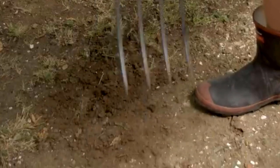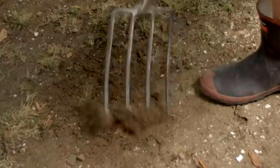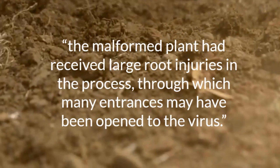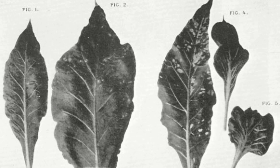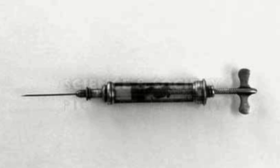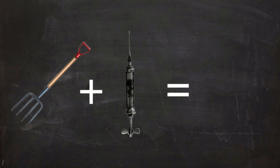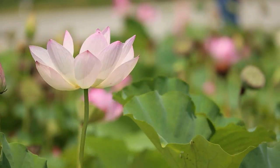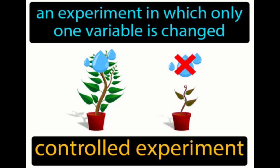He describes vigorously poking the soil around plants with a stick and then presumed that the malformed plant had received large root injuries in the process, through which many entrances may have been opened to the virus. In summary, Beijerinck caused plants to become diseased by damaging their roots or injecting them with material from sick plants, finding that, incredibly, the more he did this, the worse the plant looked. In no way did he show how his experiments related to what happens in nature, and fatally he performed no control experiments, so could make no sound scientific claims about any of it.